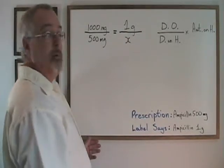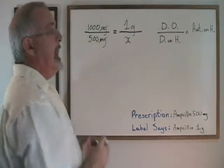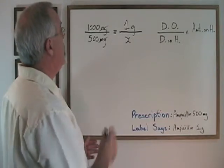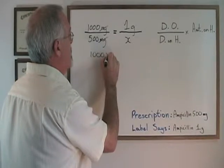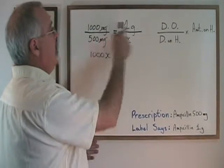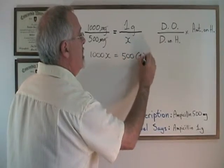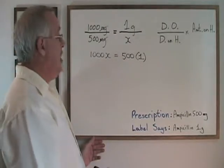The first thing I'm going to do is cancel my units. Milligrams over milligrams cancels. And then cross multiplying, top times bottom equals bottom times top. 1000x equals 500 times 1. My answer will be in grams because it's the only unit that's left.